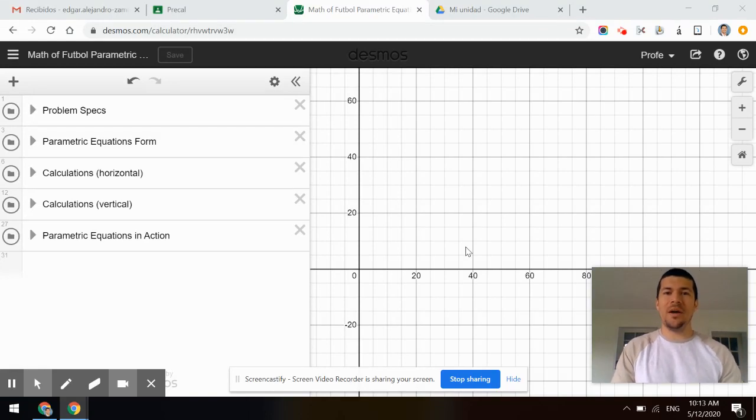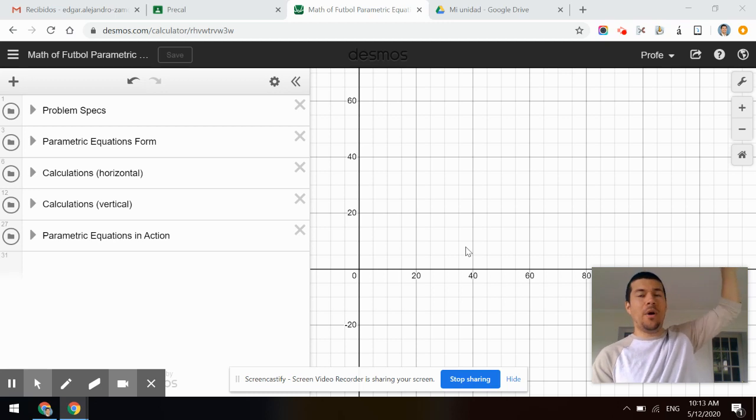Let's discuss that awesome goal by Chucky Lozano. The parabolic flight from when Hector Herrera kicks the ball. Hector Herrera, by the way, is number 16. When he kicks the ball, you just see that he pounds it into the sky. And the ball basically travels all the way across the field.